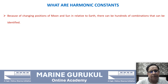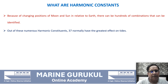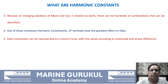Because of the changing positions of the moon and sun in relation to the Earth, there can be hundreds of combinations that can be identified. Out of these numerous harmonic constituents, 37 normally have the greatest effect on tides. Each constituent can be represented as a cosine curve, with values providing its amplitude and phase difference.